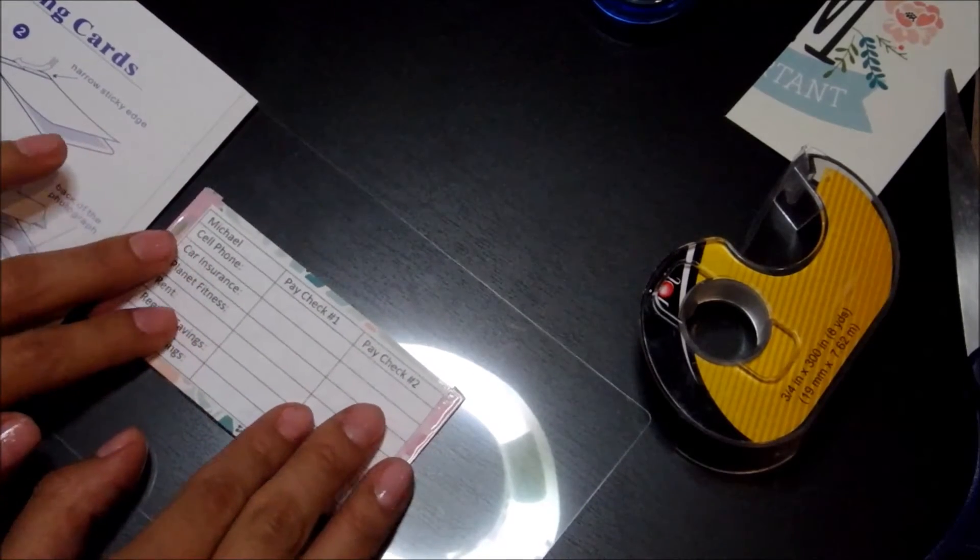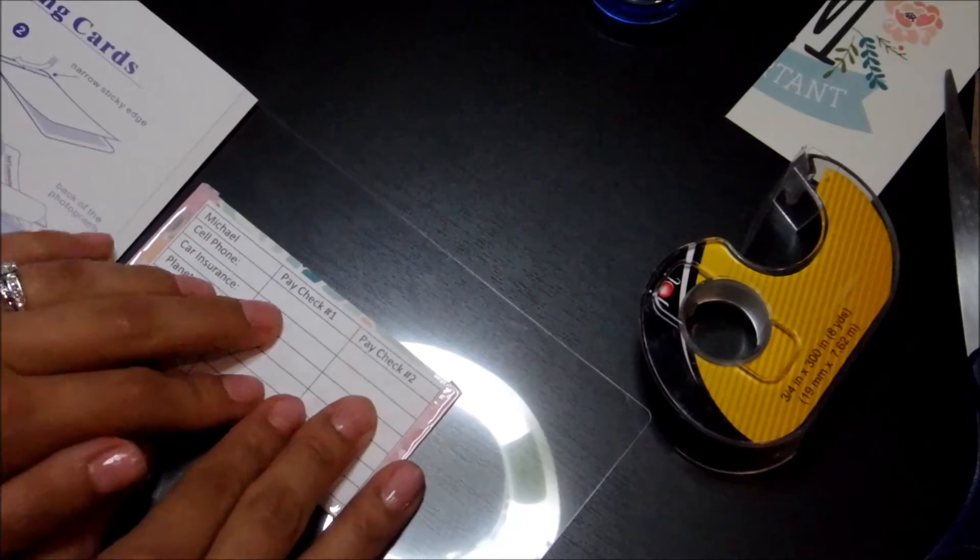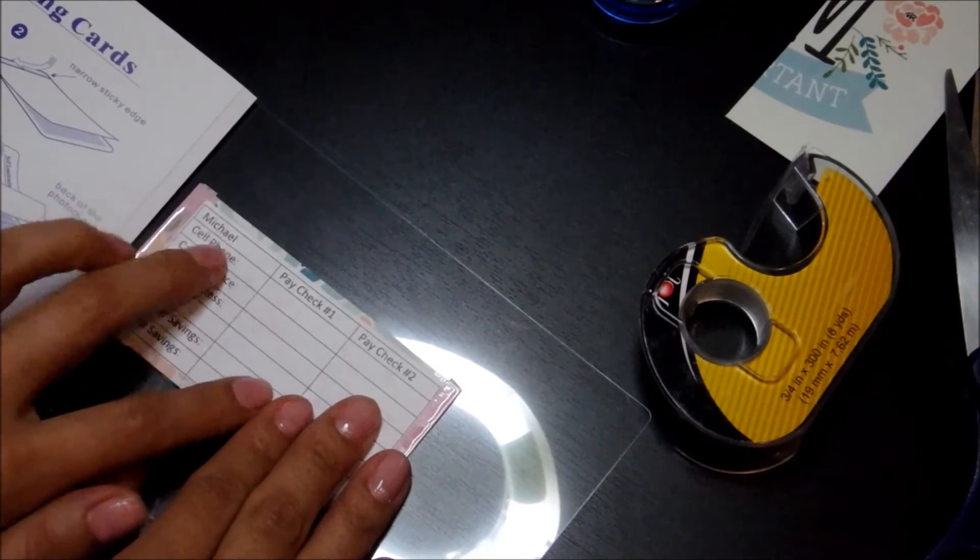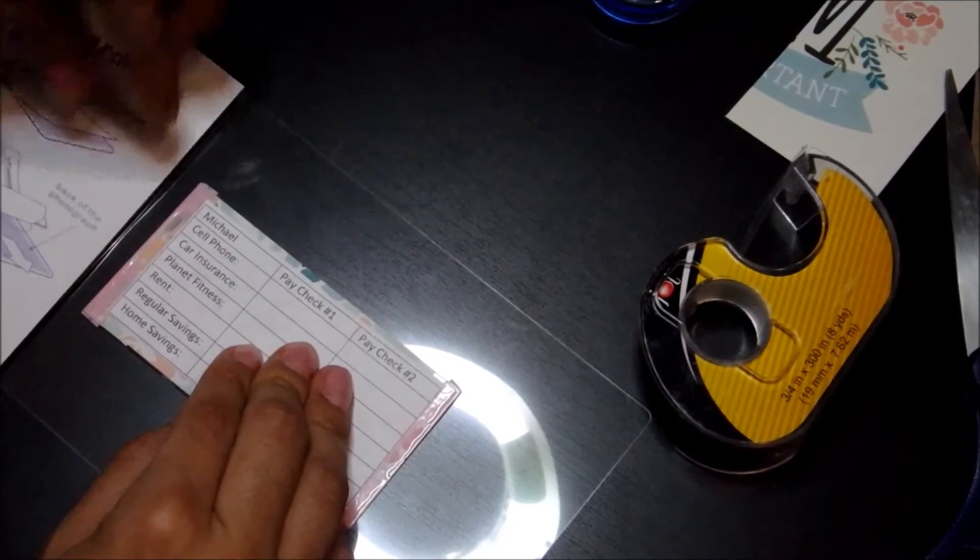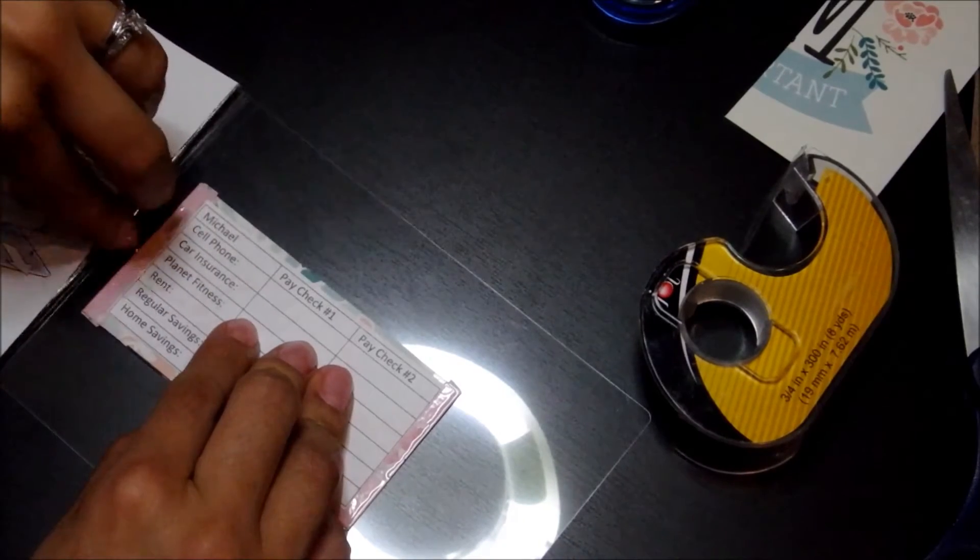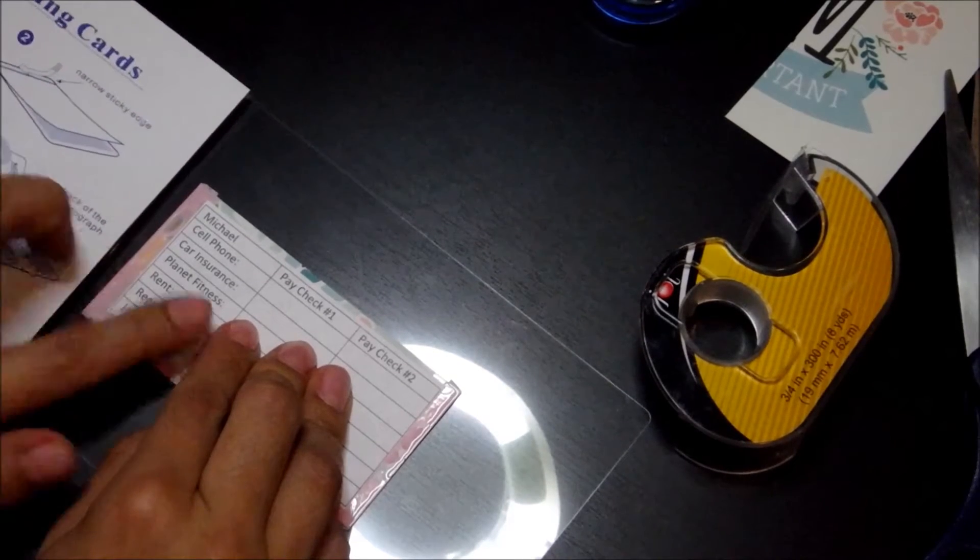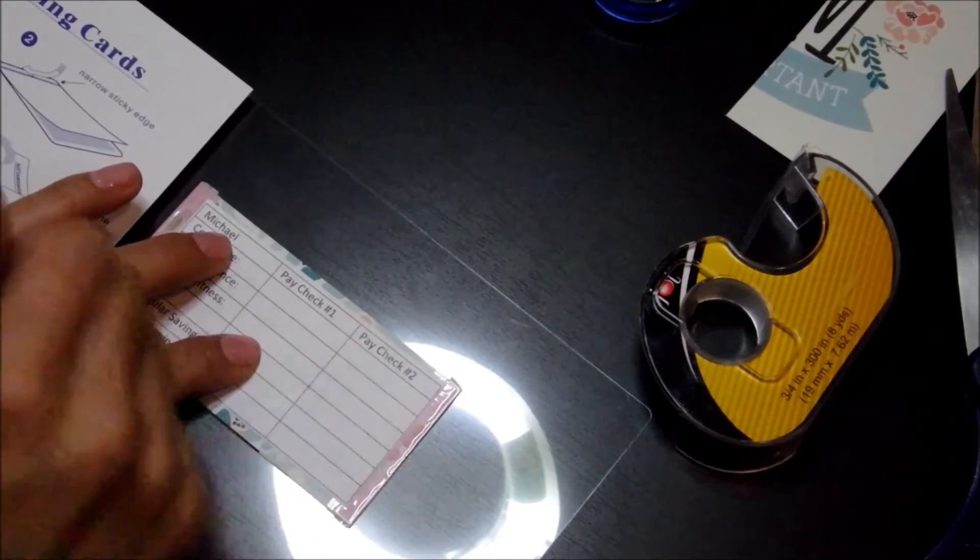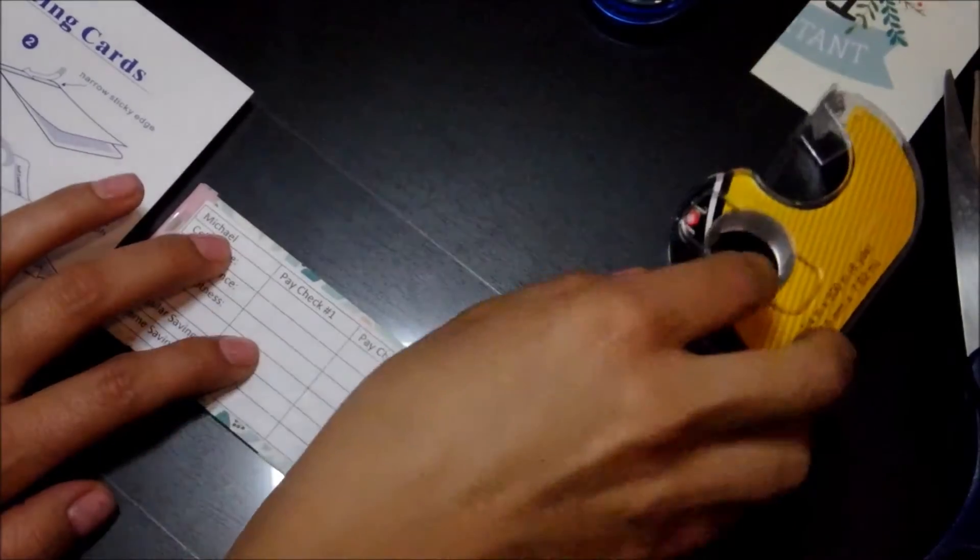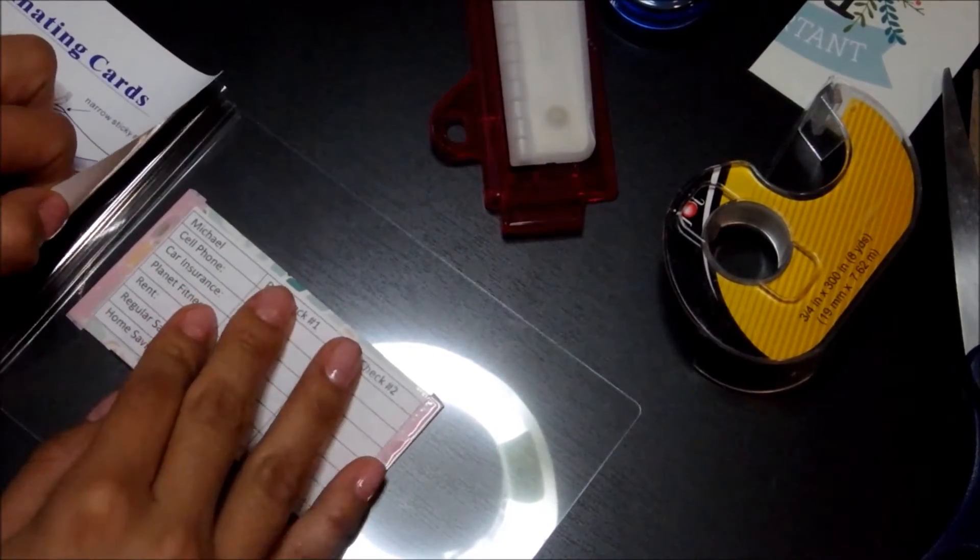So I'm going to go ahead and put Michael's first since his paycheck is the one that pays most of our bills. So you just go ahead and take this off and make sure you're really careful just because this film can actually move your paper. And then you're also going to need some kind of card just to swipe off all the air bubbles. I'm going to go ahead and use my ruler for that. So yeah, let's go ahead and get started.